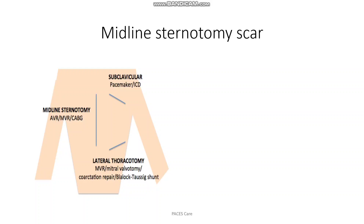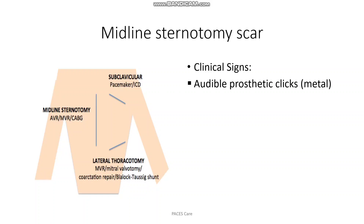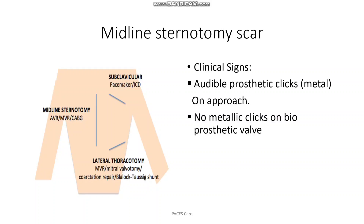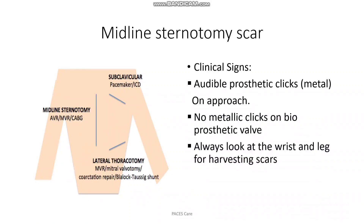Then you have to check whether the valve is working or not. You have to check for peripheral oedema, check for crepitations in the lungs, check for features of heart failure, check for infective endocarditis, and listen carefully for a regurgitant murmur. If these signs are present, you can say that the valve is not working well.